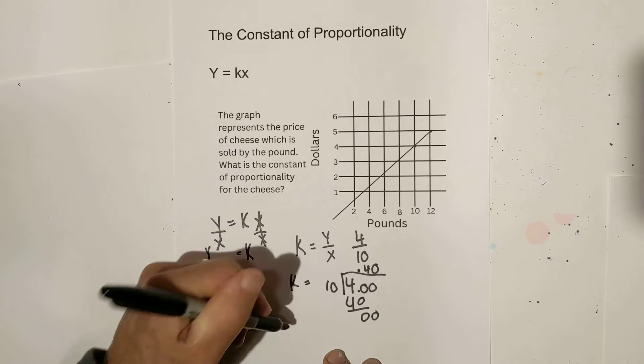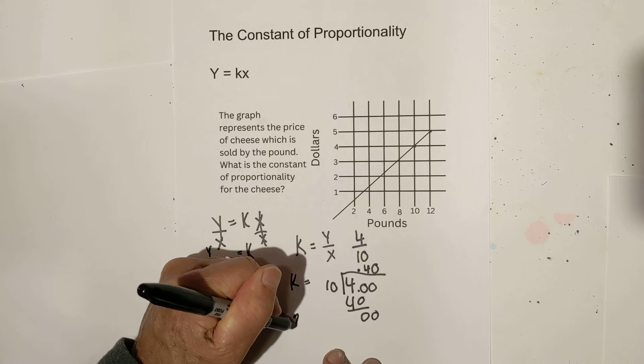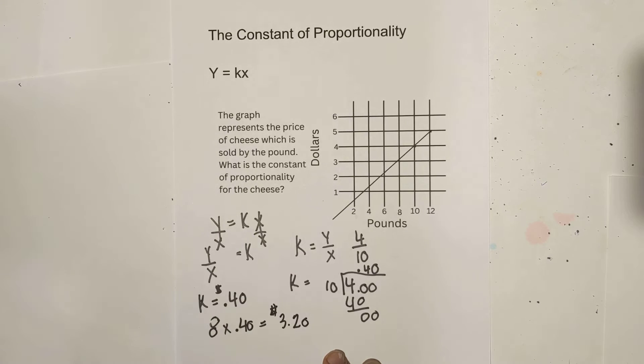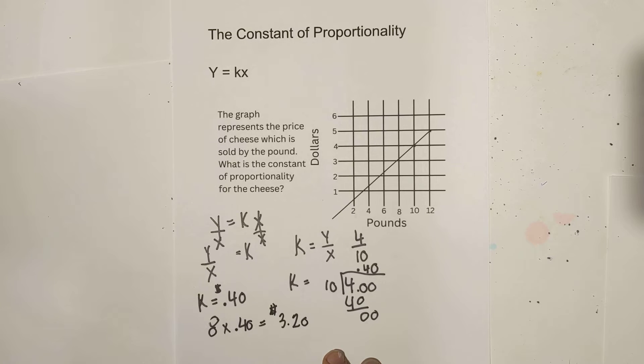8 times 0.4 is 3.20 or it's going to cost us 3 dollars and 20 cents. Let's work another example.